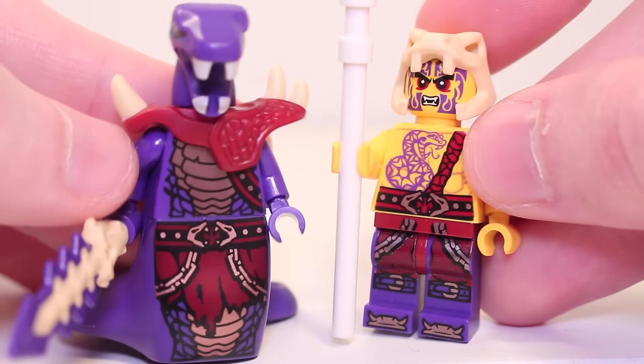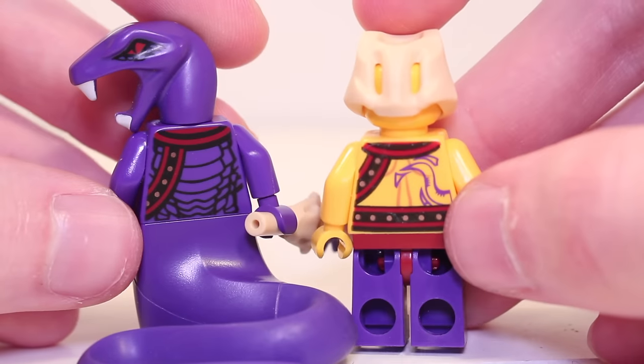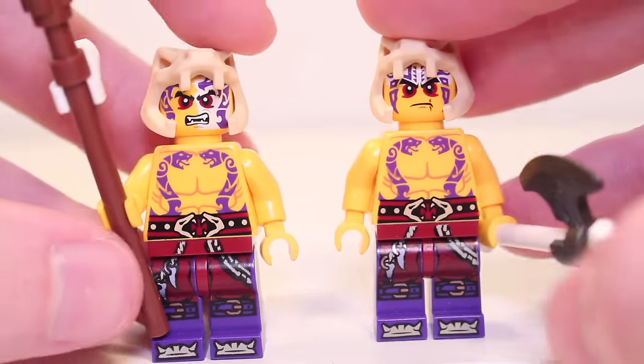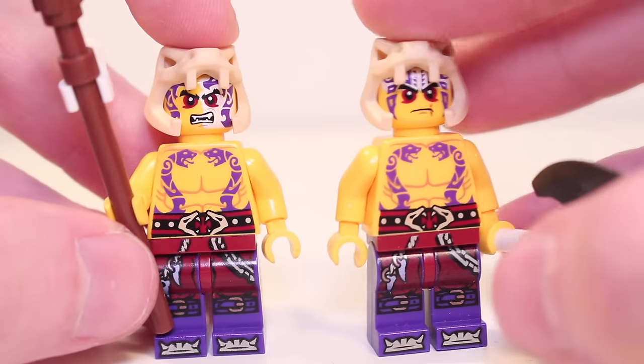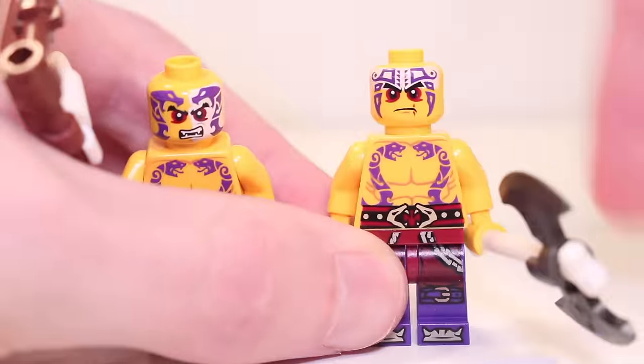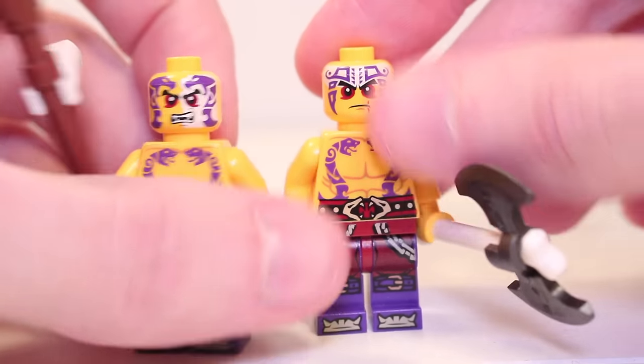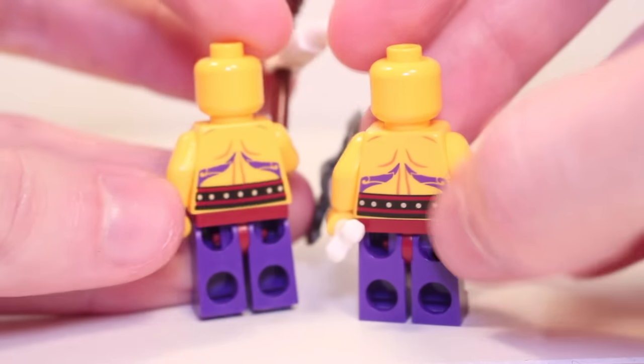Chop'rai though, they just aren't the same. In fact this is actually Zugu'rai. The printing and armor piece make it a perfect match. The final figures are our generic army builder warriors, Sleven and Krait. The only difference between them is face printing, with Sleven's white detailing covering one side of his face rather than the top like Krait. These are still good minifigures though, but sadly we didn't get their Anacondrai forms.